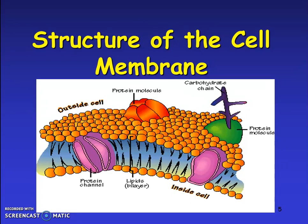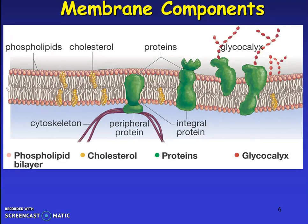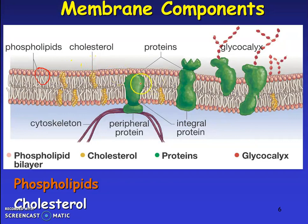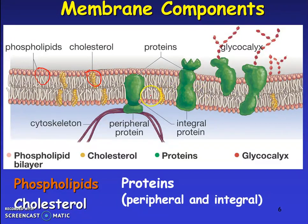This is the structure of the cell membrane. The membrane components are basically phospholipids — as you can see here — along with some cholesterol and proteins. The green elements shown are proteins. So the cell membrane is made up of phospholipids, cholesterol, and proteins.